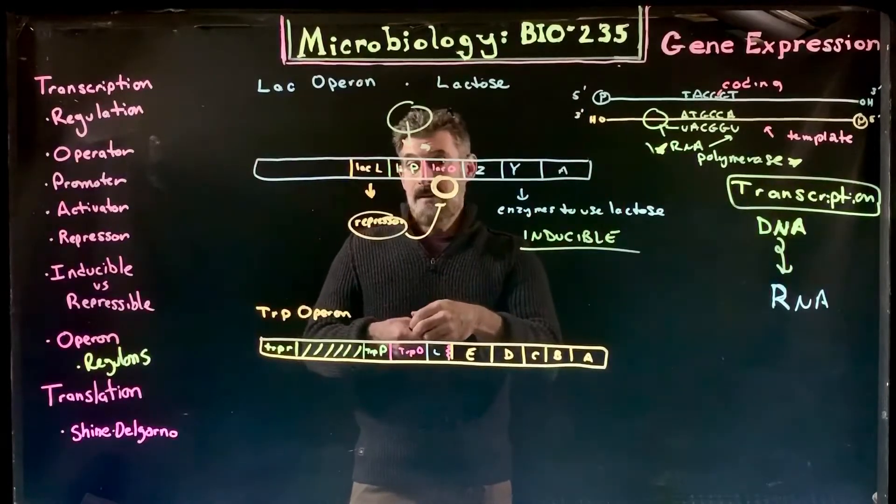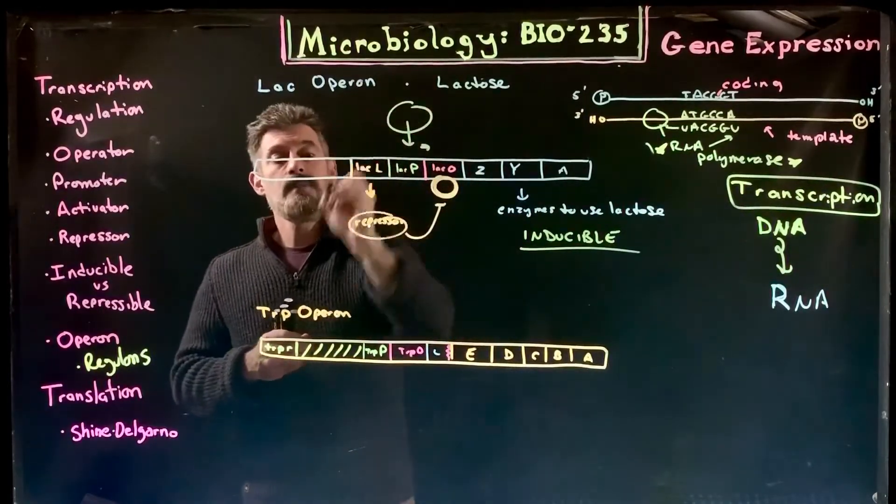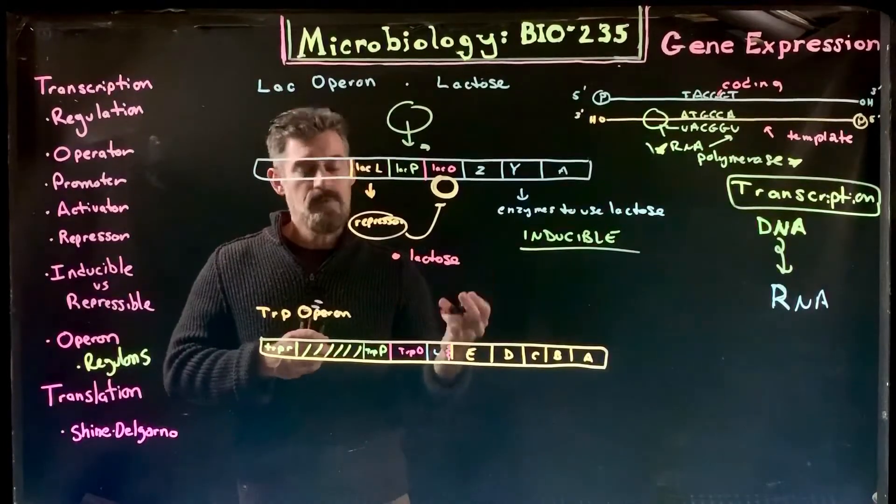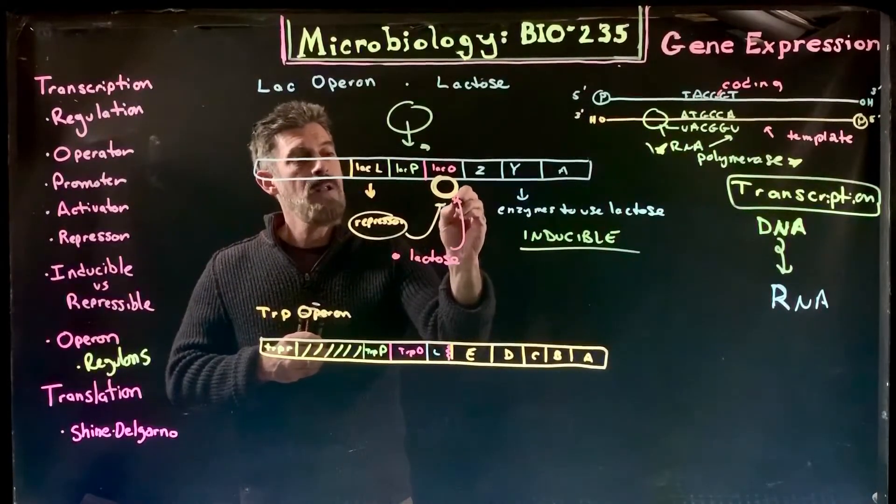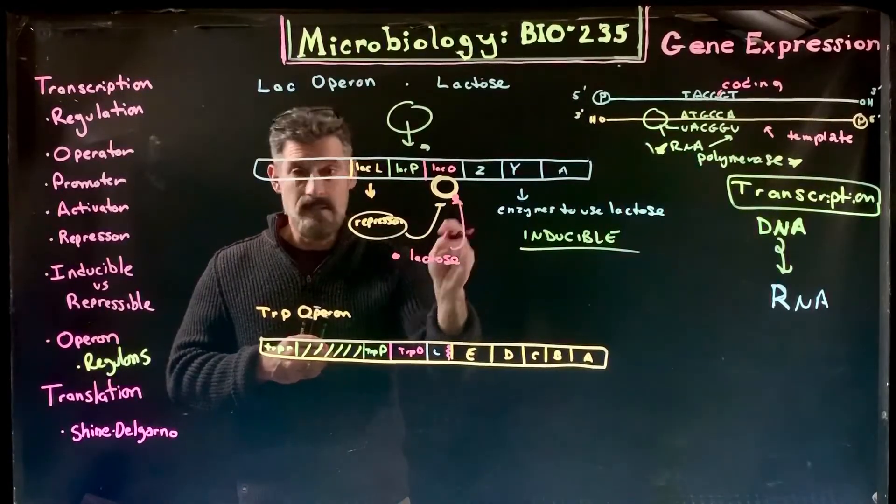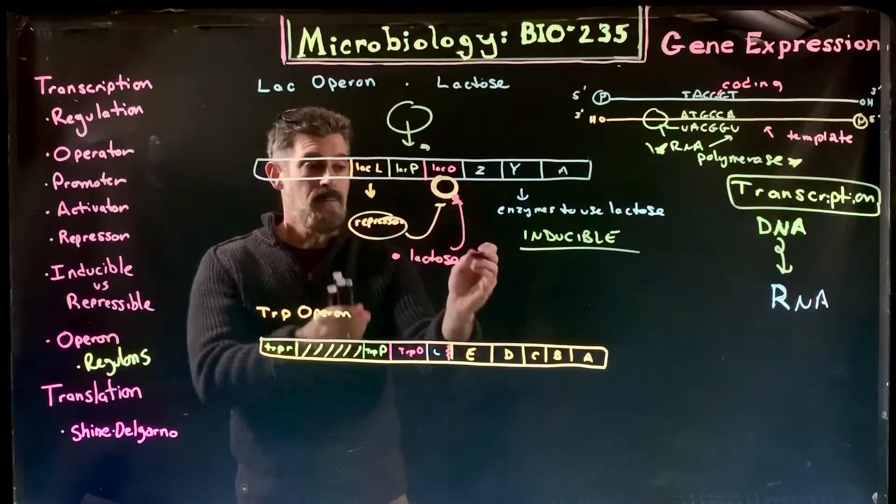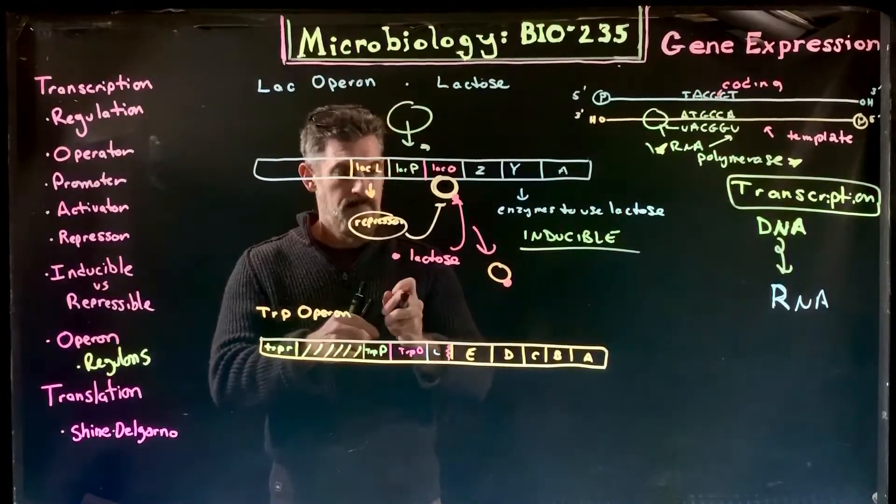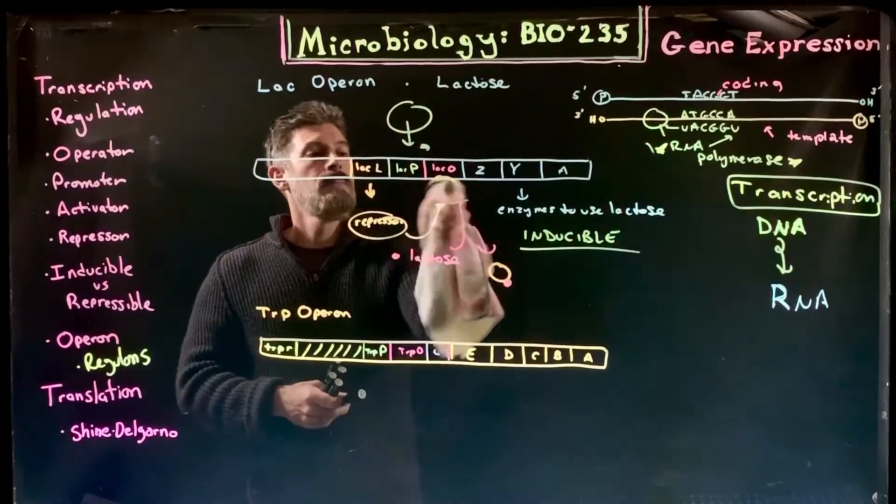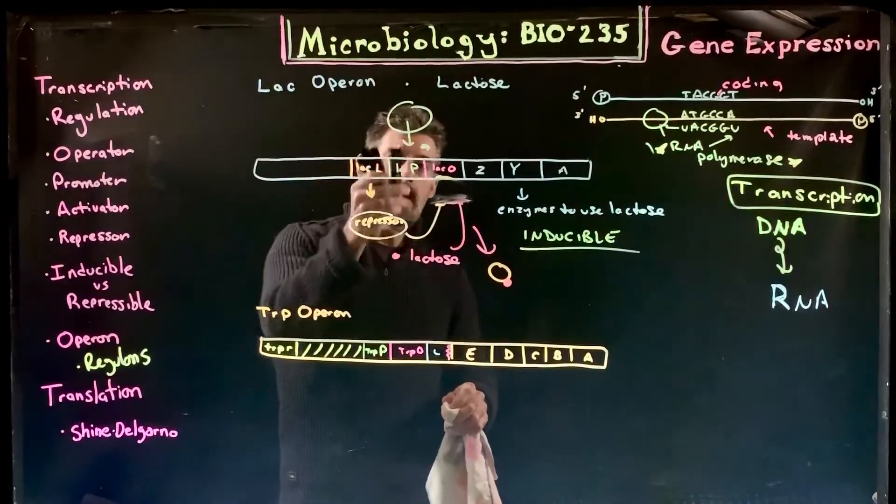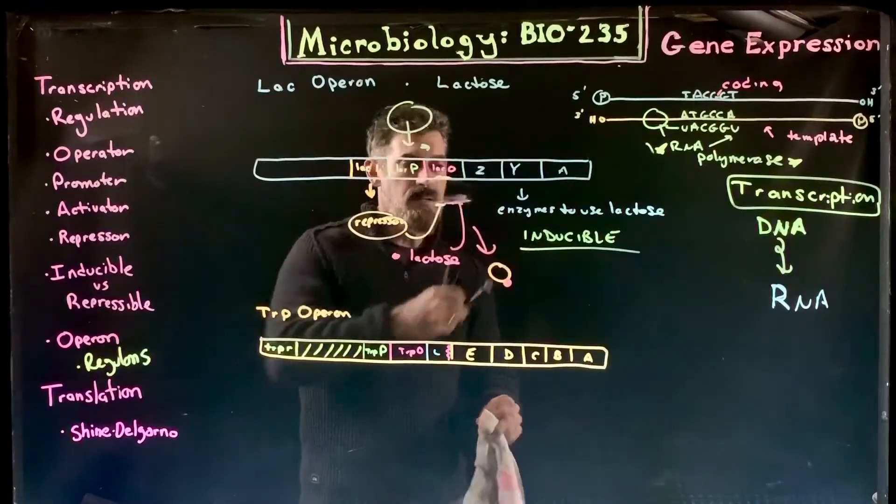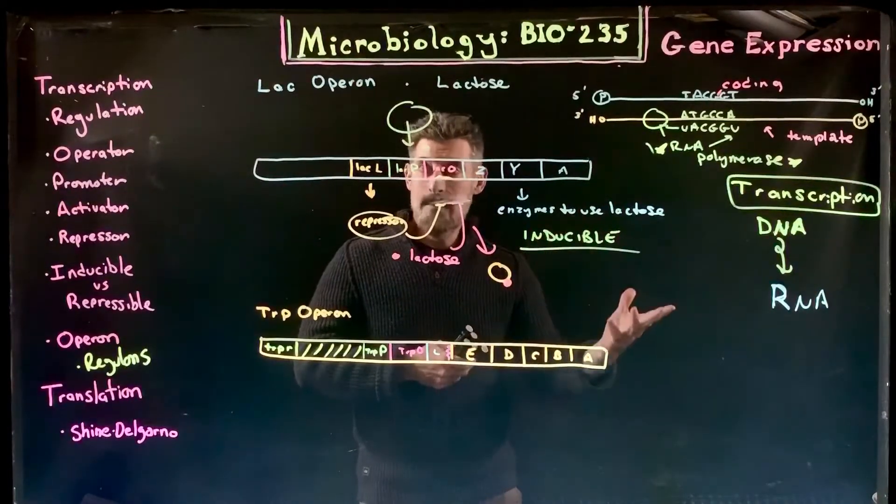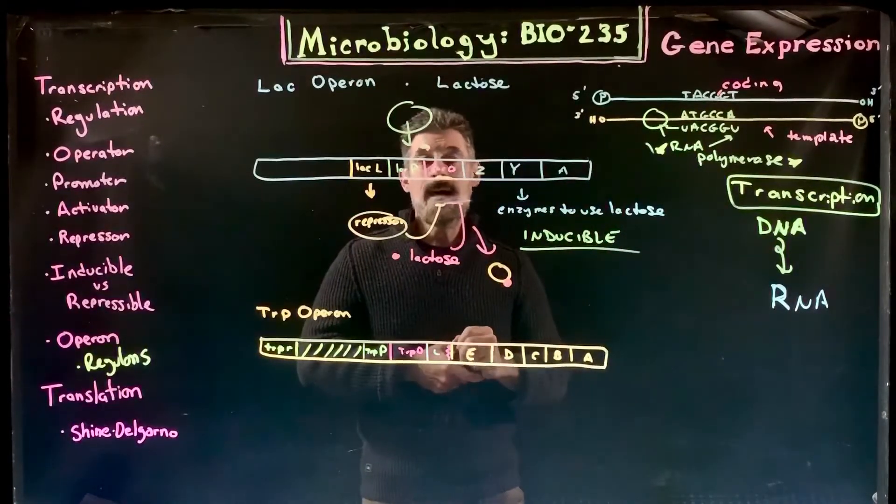If lactose is present, it's converted into allolactose, which binds to the repressor protein and removes it. We have the repressor protein plus lactose, and now this region is open. RNA polymerase will come in, bind, and express these genes. They'll produce the enzymes that can use lactose for metabolism. That's an example of an inducible operon using the lac operon system.